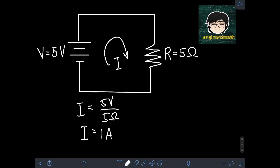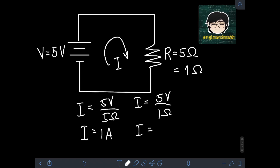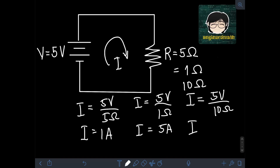If I try to change the value of the resistance, let's say to 1Ω, we get a new value of current equal to 5V divided by 1Ω, which is 5A. And if I change the value of resistance to 10Ω, we get a new value of current as 5V divided by 10Ω, which is equal to 5/10 or 0.5A.